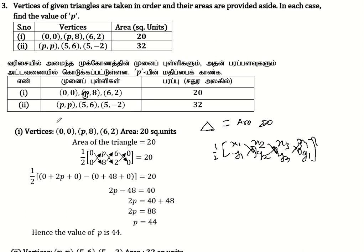Now, x1, y1 is the first point: 0 is x1, y1; x2, y2; x3, y3. So the vertices are (0,0), (3,8), and (6,0), with area 20.